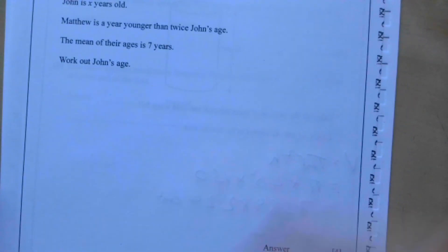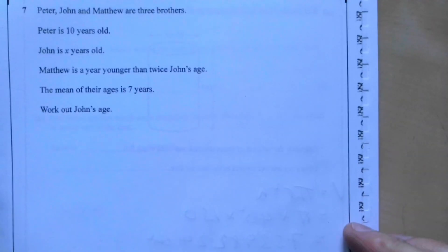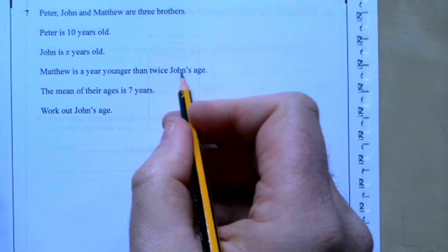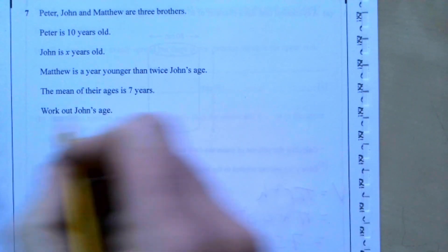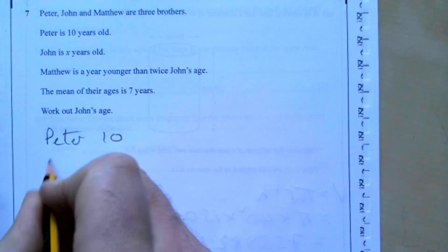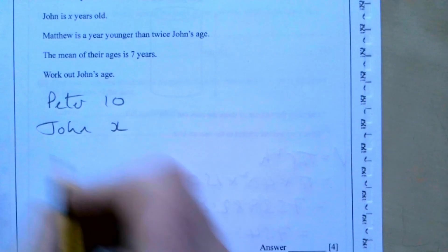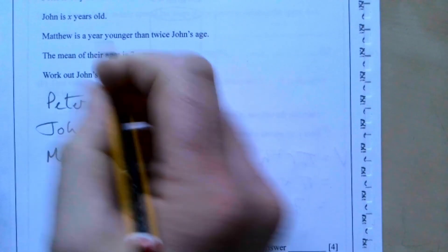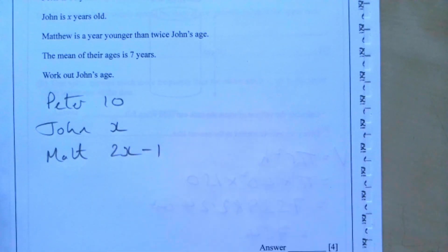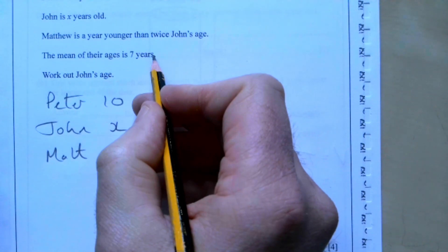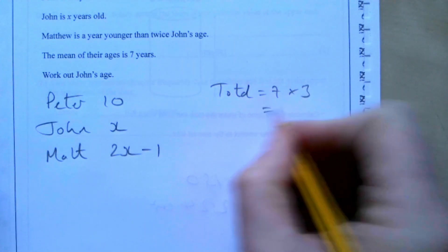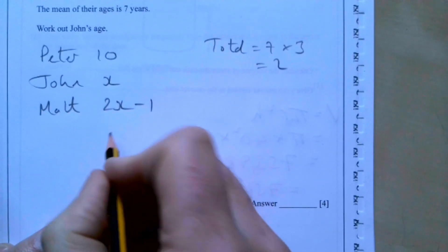Question seven: Peter is 10 years old, John is x years old, and Matthew is a year younger than twice John's age, so Matthew is 2x minus 1. The mean of their ages is 7, so their total must be 7 times 3, which is 21.